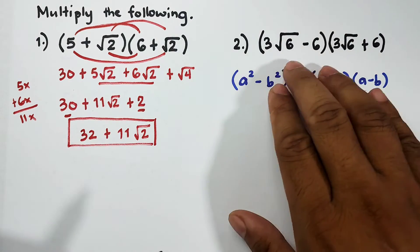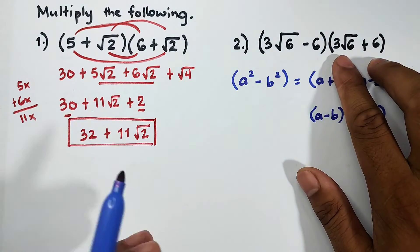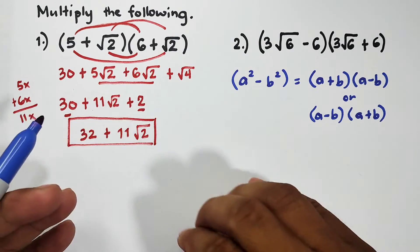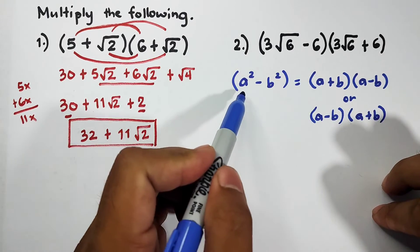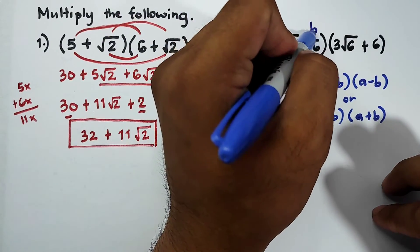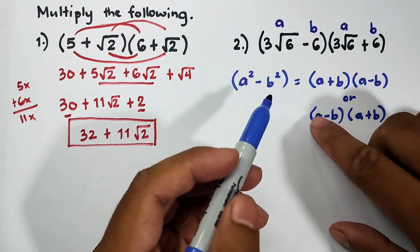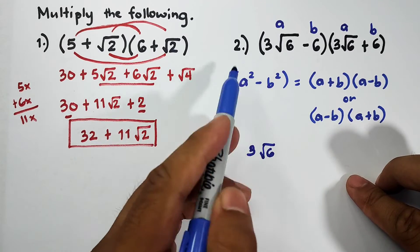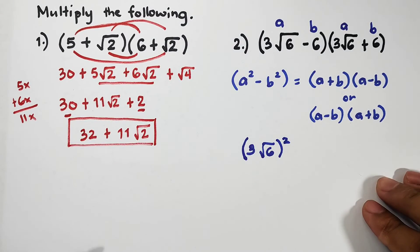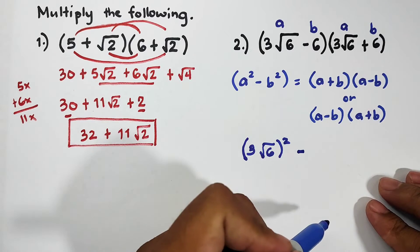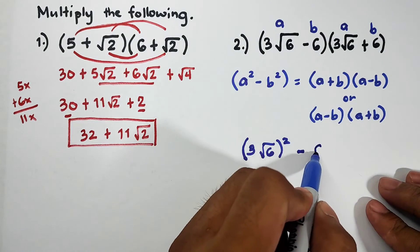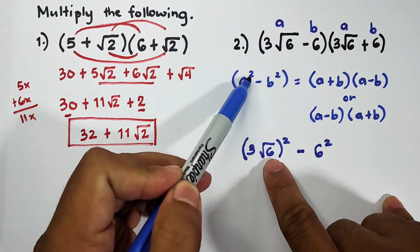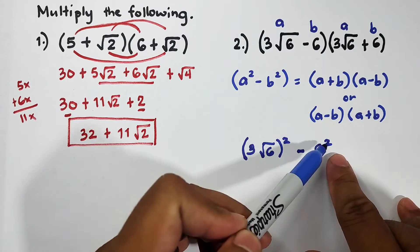This is your a, this is your b, this is your a, and this is your b. What you do is get the first term, 3 square root of 6, and then square it. Then minus your b which is 6, then square it as well.